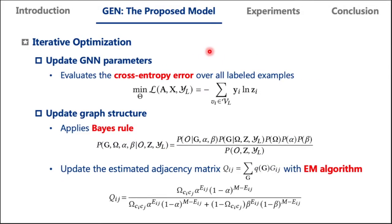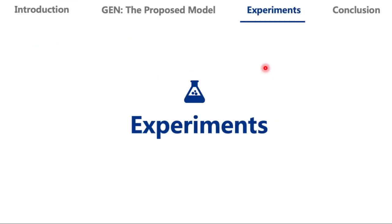For iterative optimization, we evaluate the cross entropy error over all labeled examples to update GCN parameters. Then we apply Bayes' rule, substitute the above probabilities in the graph estimator, and maximize the posterior distribution with EM. Finally, we get the expectation Q of the optimal graph.